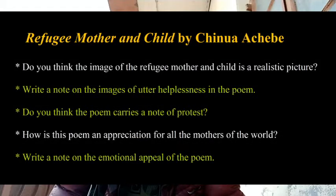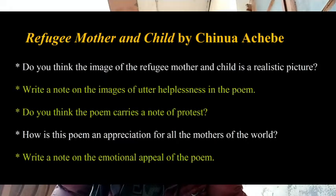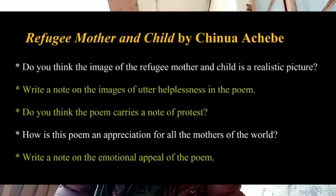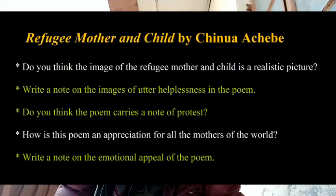Finally, the last poem: Refugee Mother and Child by Chinua Achebe — a Nigerian poet. You should know his context, the kind of poetry and novels he wrote. Important short answer questions: Do you think the picture of the refugee mother and her child is a realistic picture? Write a note on the images of utter helplessness in the poem. Do you think the poem carries a note of protest? For long answers: How is this poem a poem of appreciation for all the mothers of the world? Write a note on the emotional appeal of the poem.